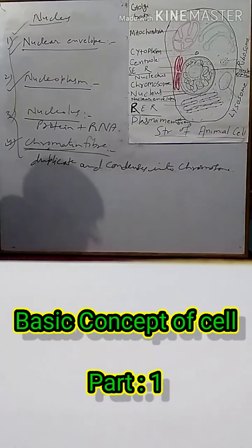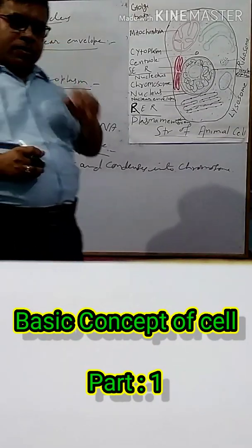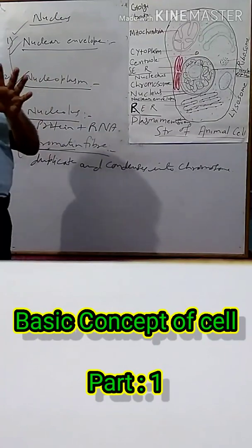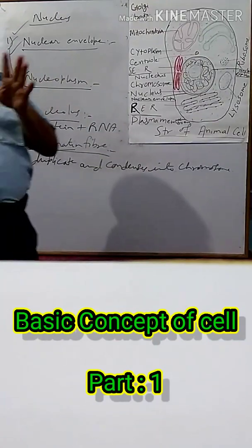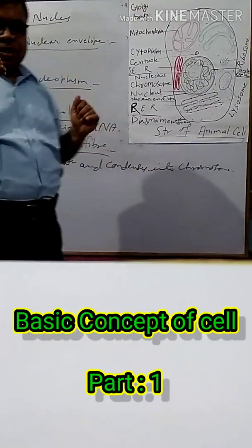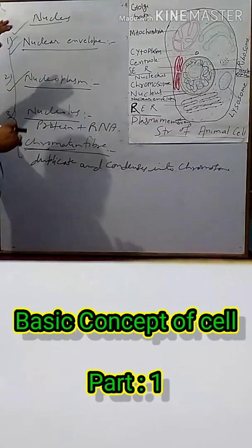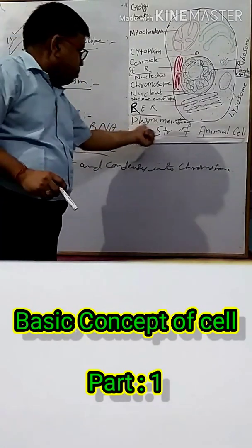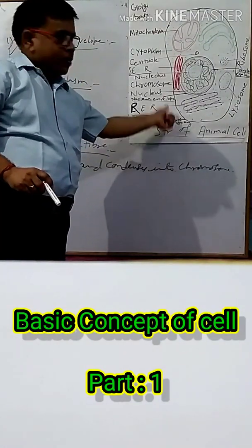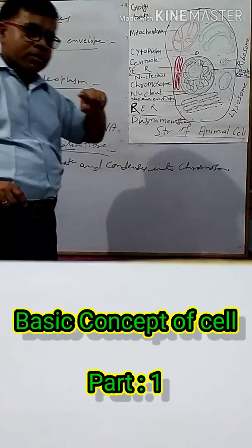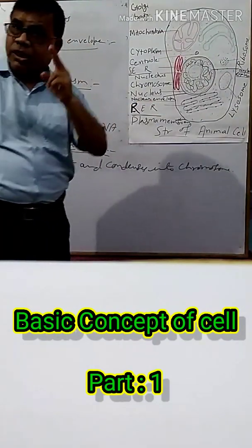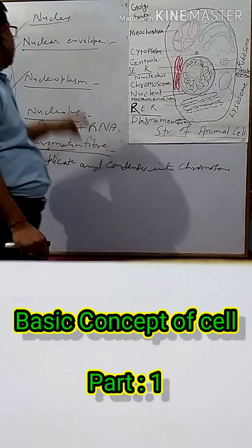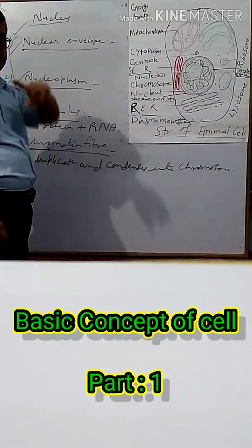So this is the complete structure of the cell. To summarize: the cell consists of three main parts — first, the cell membrane; second, the cytoplasm; and third, the nucleus.